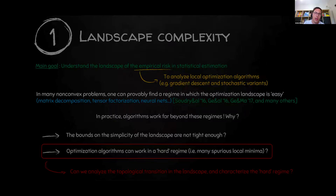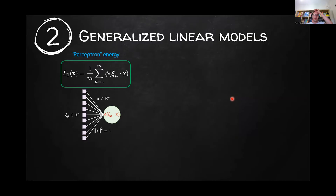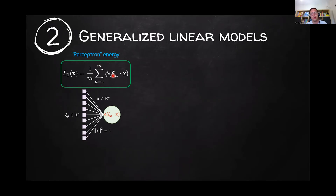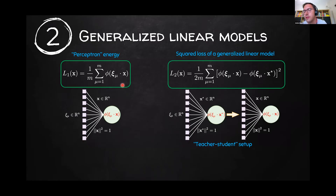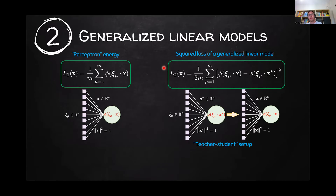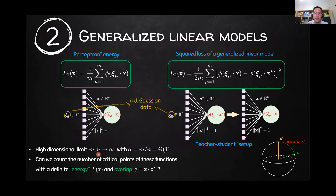For the purpose of this talk, I'll focus on two models. The first is a perceptron energy in statistical physics language — basically one node in a network with a normalized weight vector, and the loss is the sum of an activation function applied to the projection of the data on the weight vector. The second is the square loss of a generalized linear model: a teacher-student setup where you try to recover the teacher's weights by minimizing the loss. In both cases, I assume IID Gaussian data in a high-dimensional limit where both data dimension and number of samples go to infinity at the same rate.